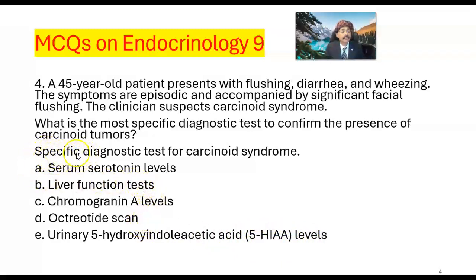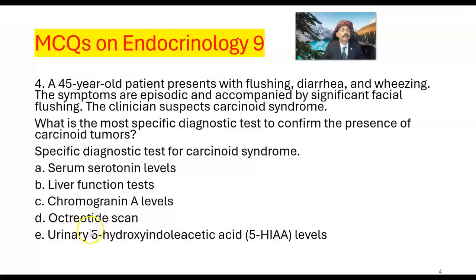The specific diagnostic test for carcinoid syndrome: serum cotinine level, liver function test, chromogranin A level, octreotide scan, urinary 5-hydroxyindoleacetic acid levels. For carcinoid tumor, the answer is E — urinary 5-hydroxyindoleacetic acid levels.